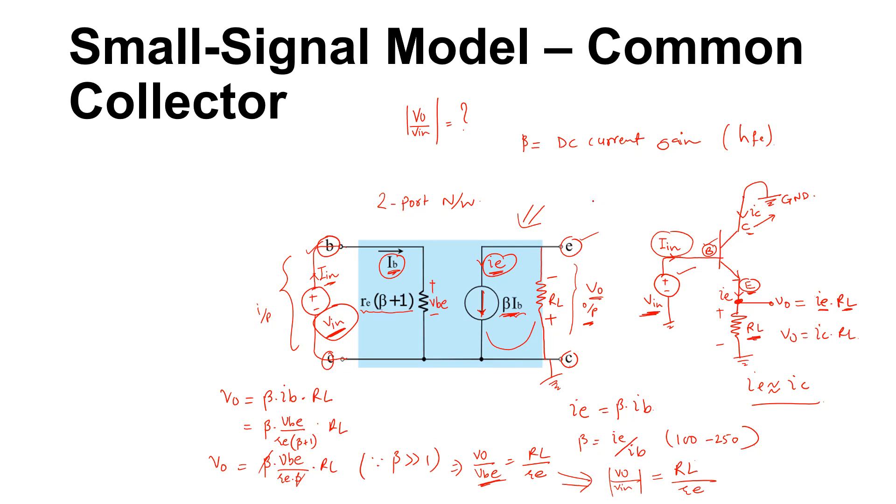That is all. If you want to take the current gain, it would be Ie divided by Ib actually, which will be beta. So that is how you can use this as a current amplifier, voltage amplifier.